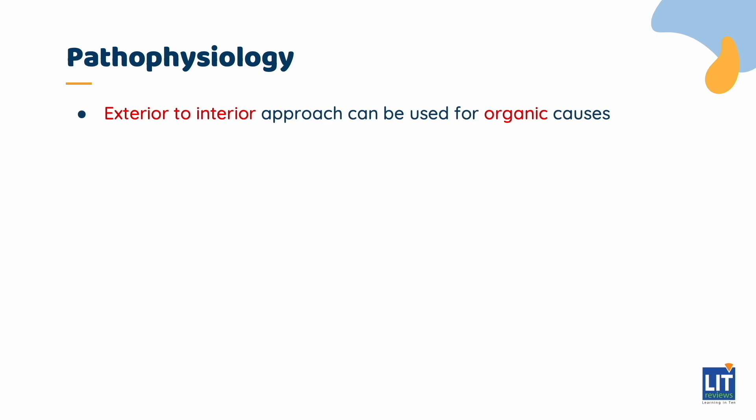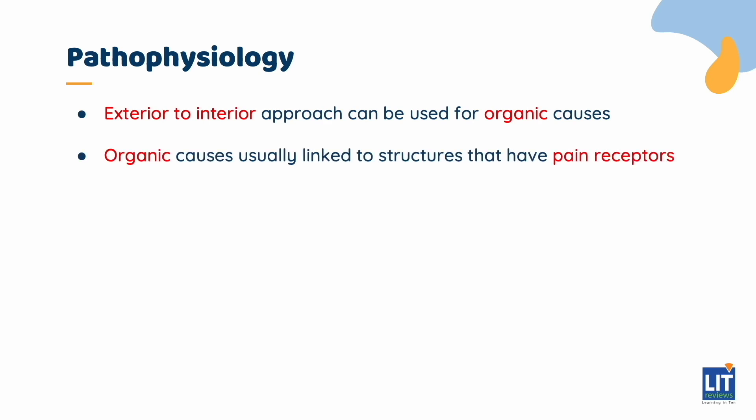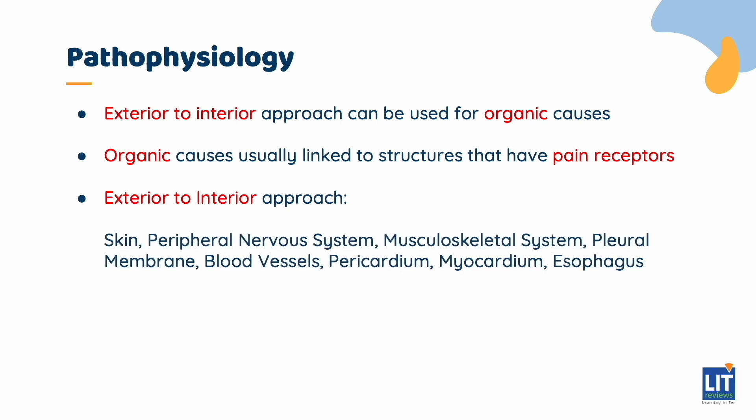Pathophysiology. Organic causes can be approached from an exterior to interior approach, and are generally caused by structures that have pain receptors to give rise to this feeling. An example of using an exterior to interior approach would be: skin, peripheral nervous system, musculoskeletal system, pleural membrane, blood vessels, pericardium, myocardium, and esophagus.